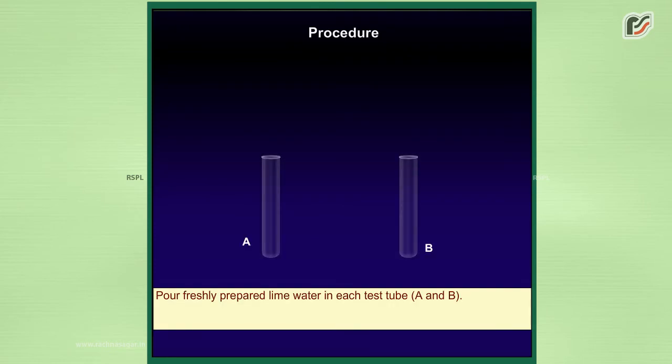Procedure: pour freshly prepared lime water in each test tube A and B.